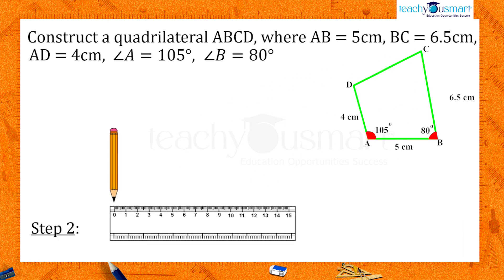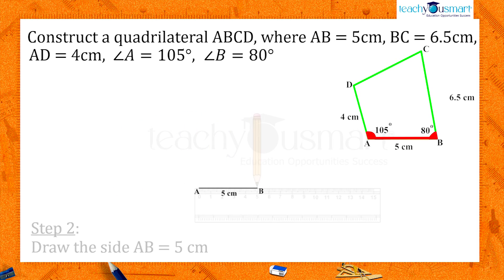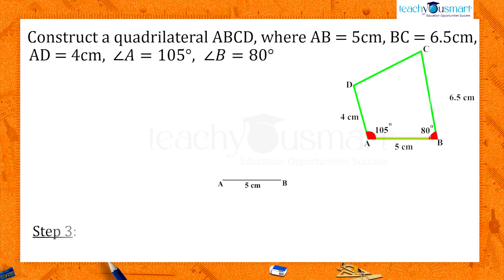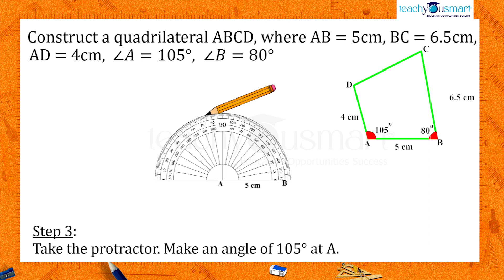Let's start our construction by drawing the side AB equals 5 centimeters. Take a protractor and make an angle 105 degrees at A.